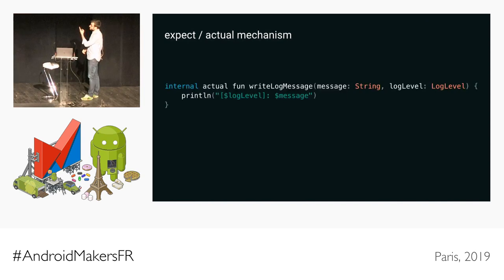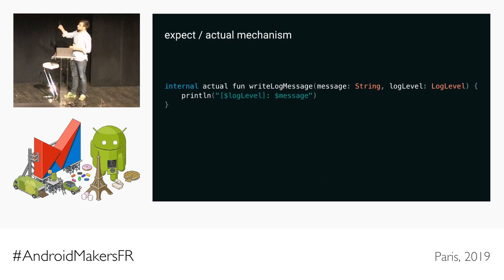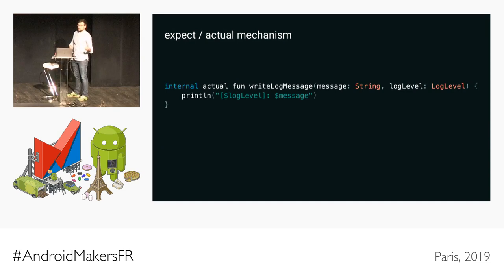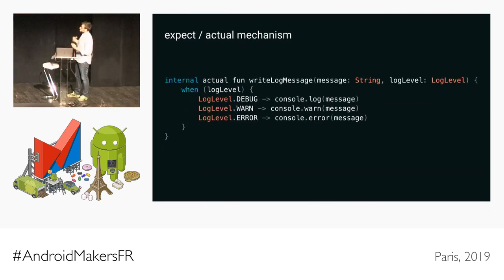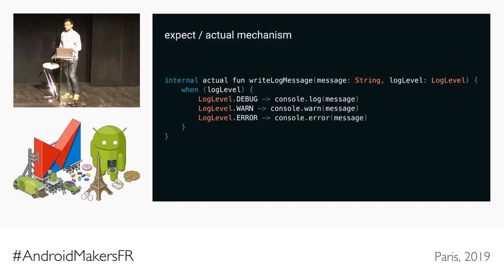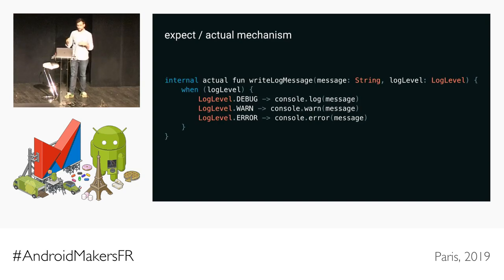So for JVM, the writeLogMessage actual implementation prints a simple message to the expected output. But if we're also targeting JavaScript, you could have a console logging the message. The signature of the function is exactly the same for any platform you're targeting, but the implementation is different. When we work with common code, we don't really care how it's implemented on different platforms — each platform takes care of its own implementation. That's the powerful tool we have here.